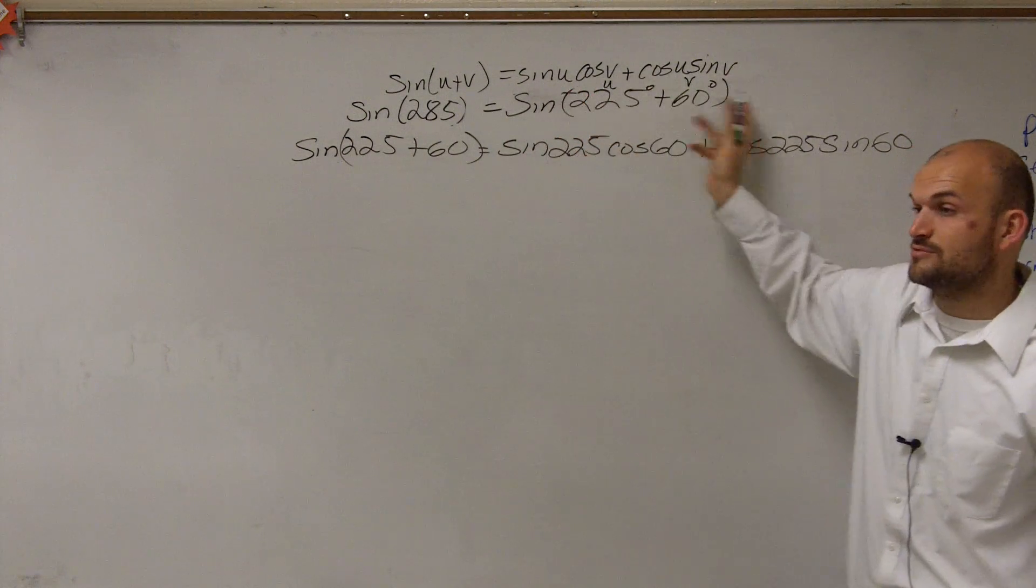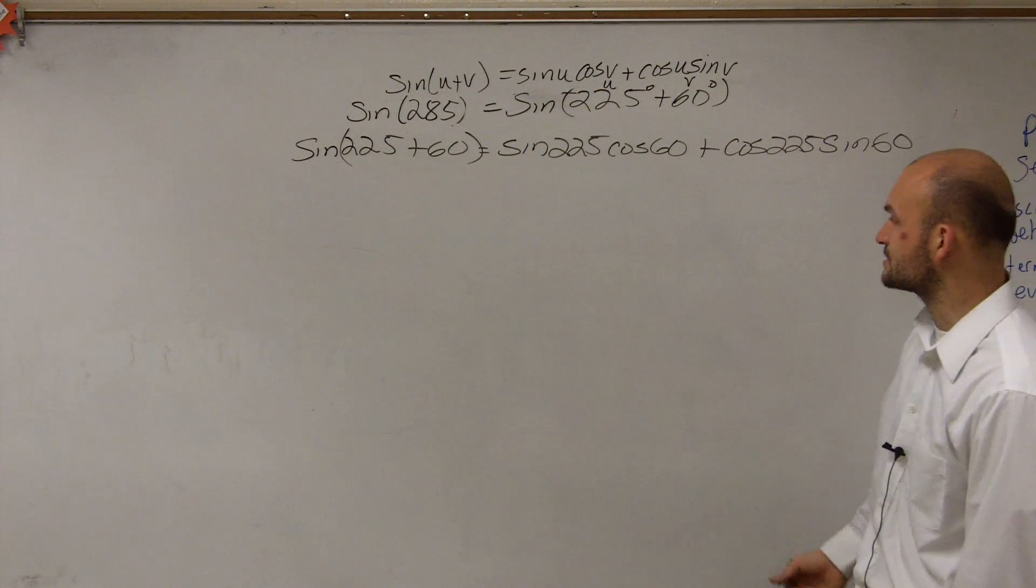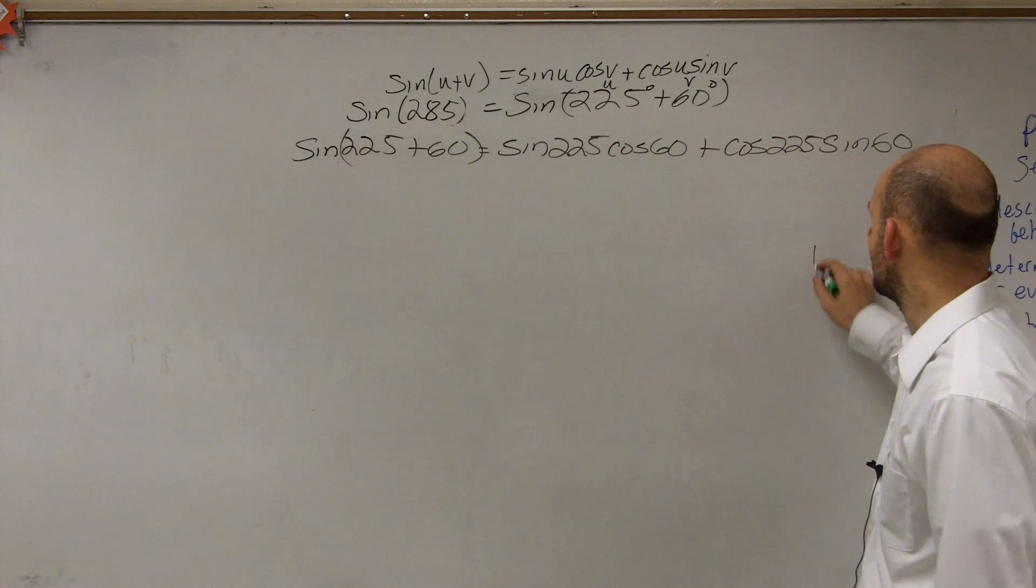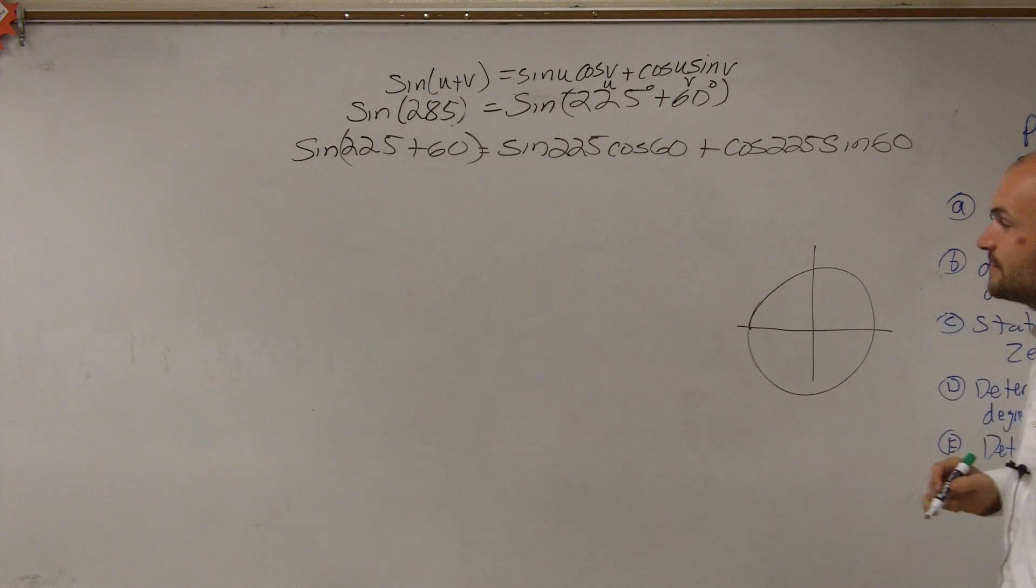So this is equal to that. I took this and plugged it into my formula. Now I just need to evaluate for 225 and 60 degrees. Let's see what that looks like from our unit circle, finding 60 degrees and 225.